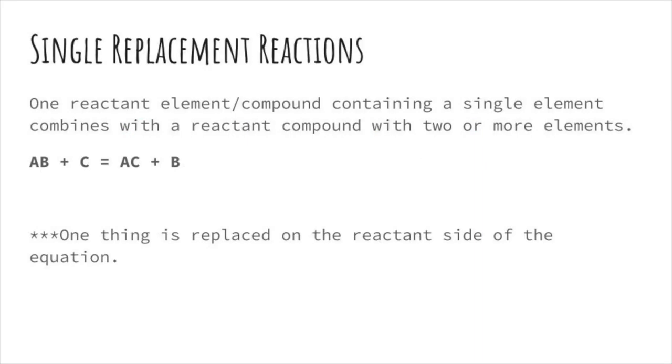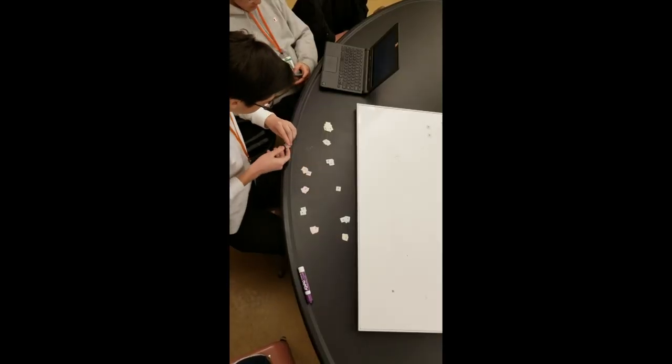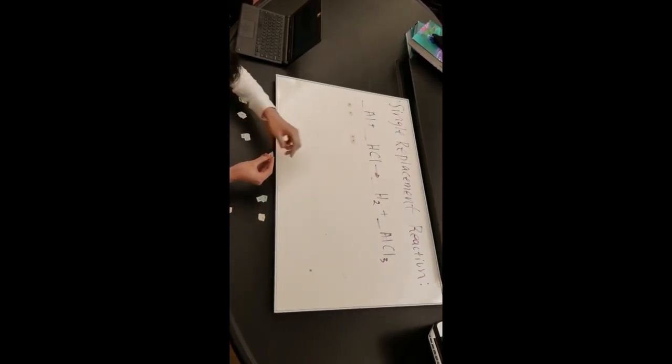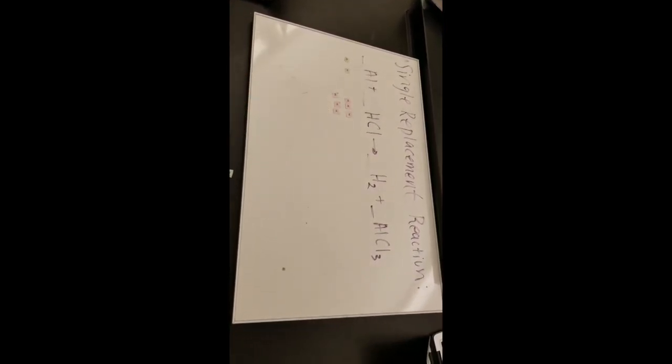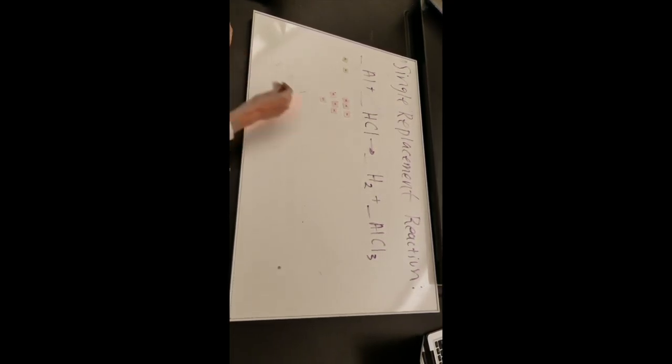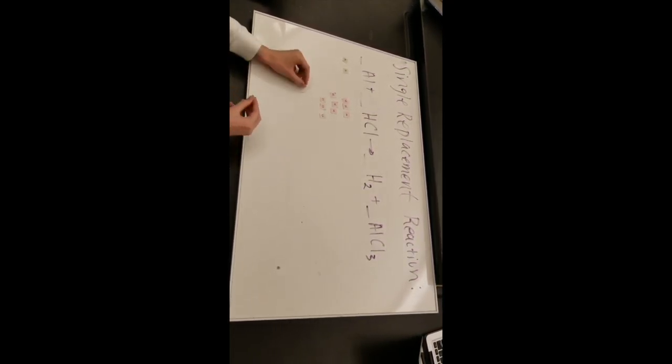Not quite, Phillip. I can tell you that you're not even close. The same concept of making sure each side has the same number of elements applies here. However, now you need to make sure which element pairs with which. An easy way to remember is by remembering the formula AB plus C equals AC plus B. This formula will help you understand what a single replacement chemical reaction will yield. Remember that if the compound is ionic, charges matter.